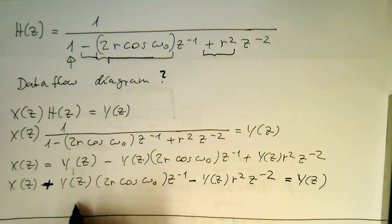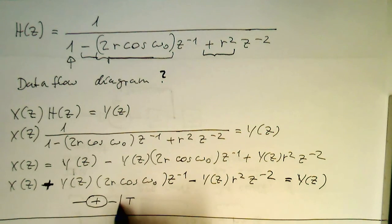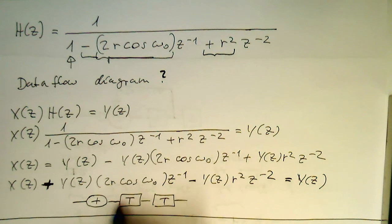So as a data flow diagram, if I manage to squeeze this in here, we have a summation node here, and then we've got a delay step, and we have another delay step here.